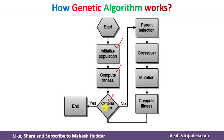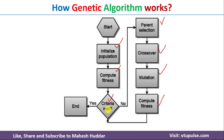We check whether the termination criteria is reached; if yes, we stop. Otherwise, we select the two best individuals based on fitness score as parents, apply crossover and mutation to get new offspring, then calculate the fitness score again. We check the termination criteria once more — if reached we stop, otherwise we go back, select parents, apply crossover and mutation, and compute fitness scores again. This loop repeats until the termination condition is met.